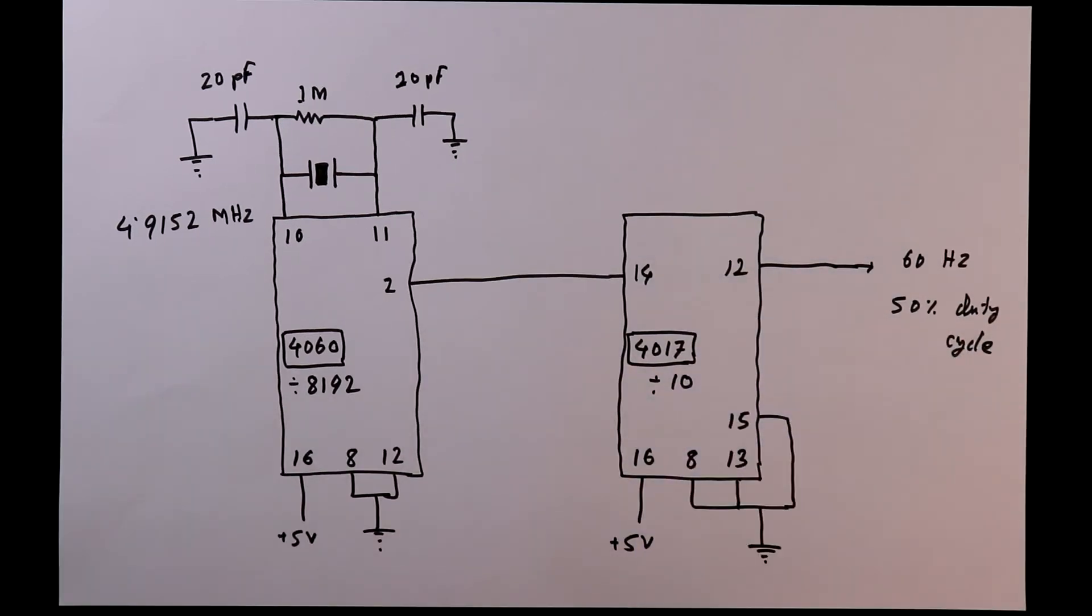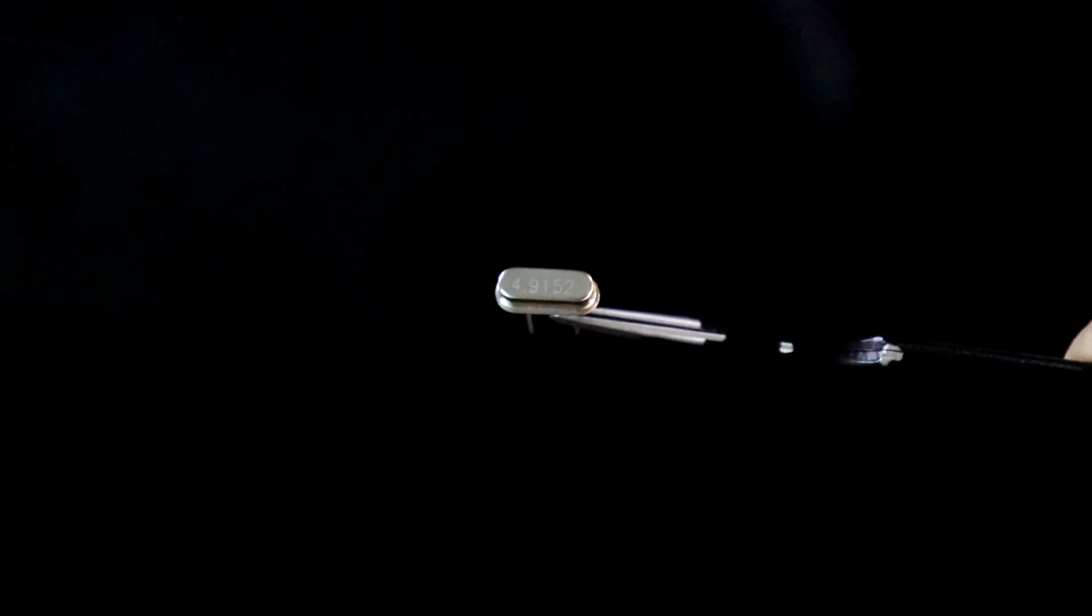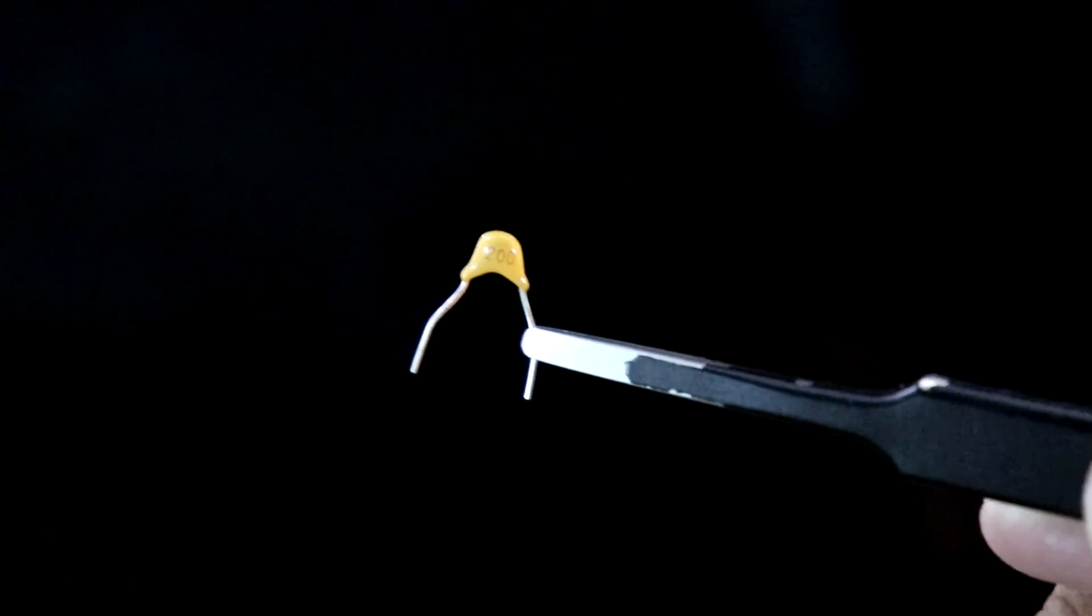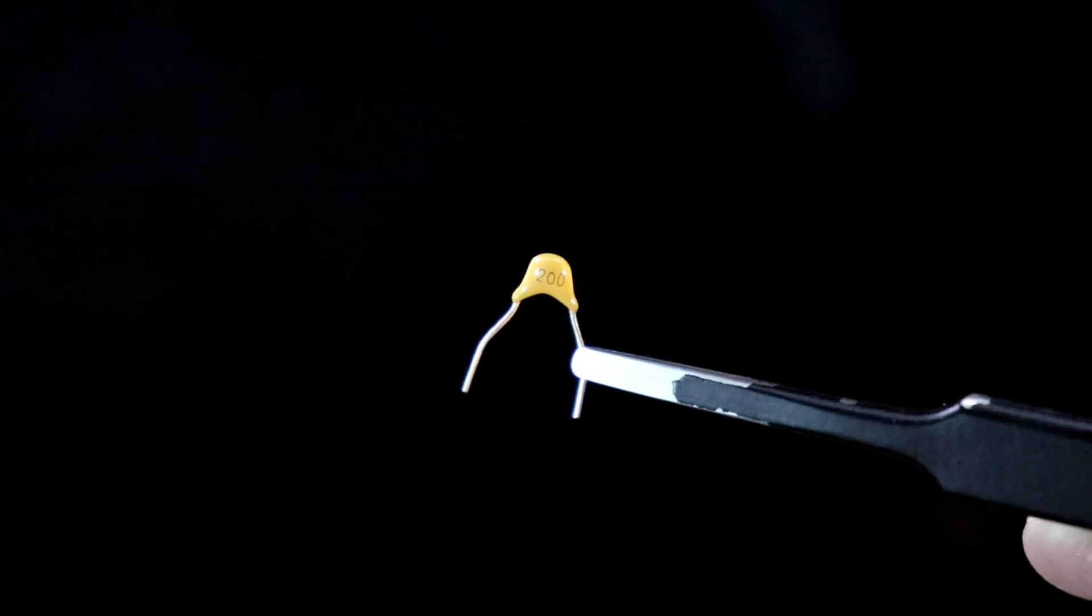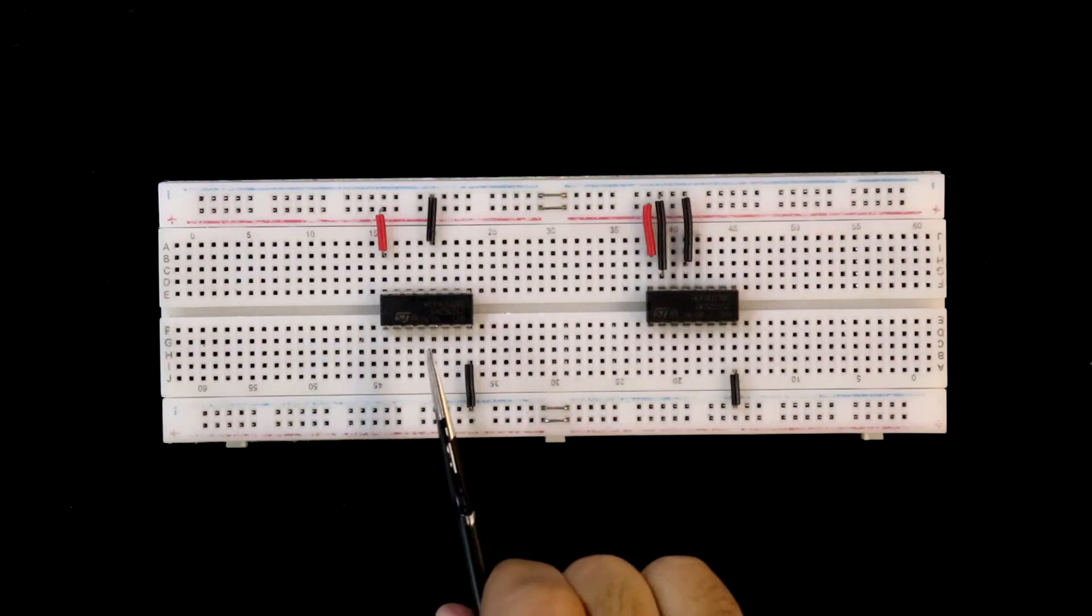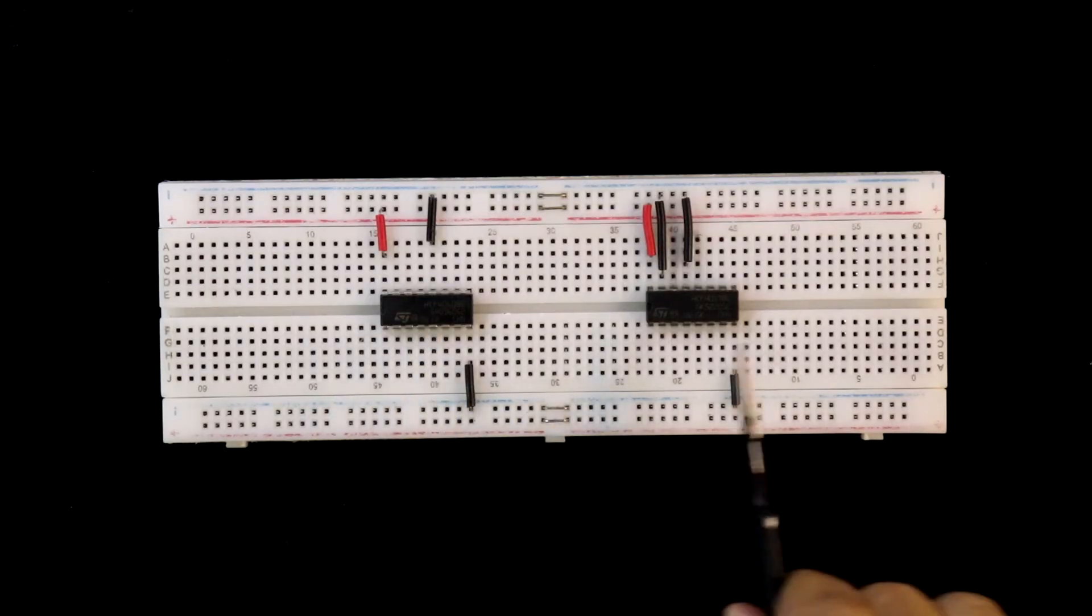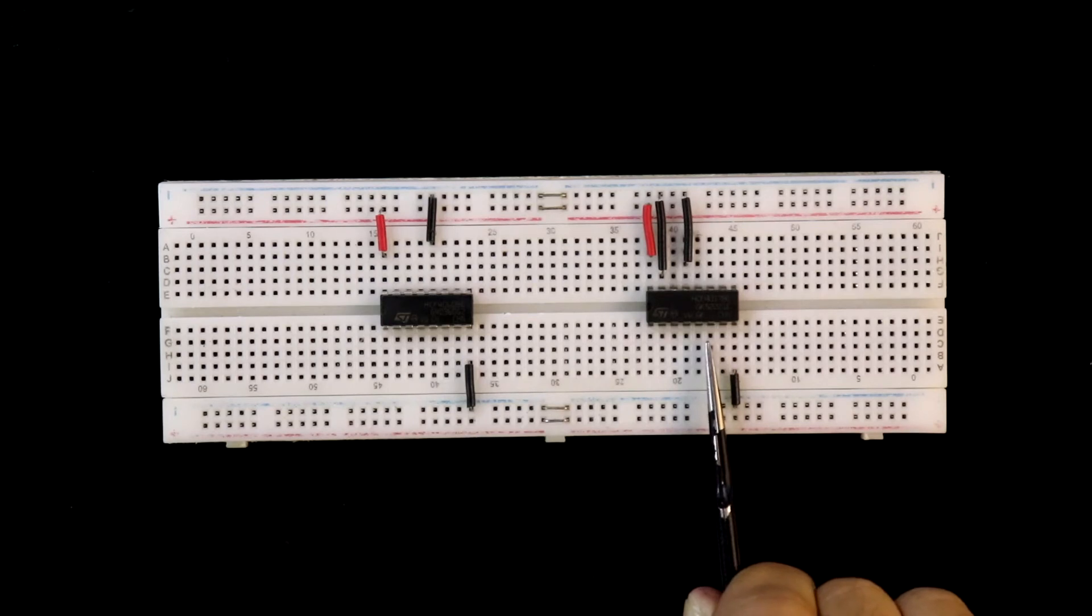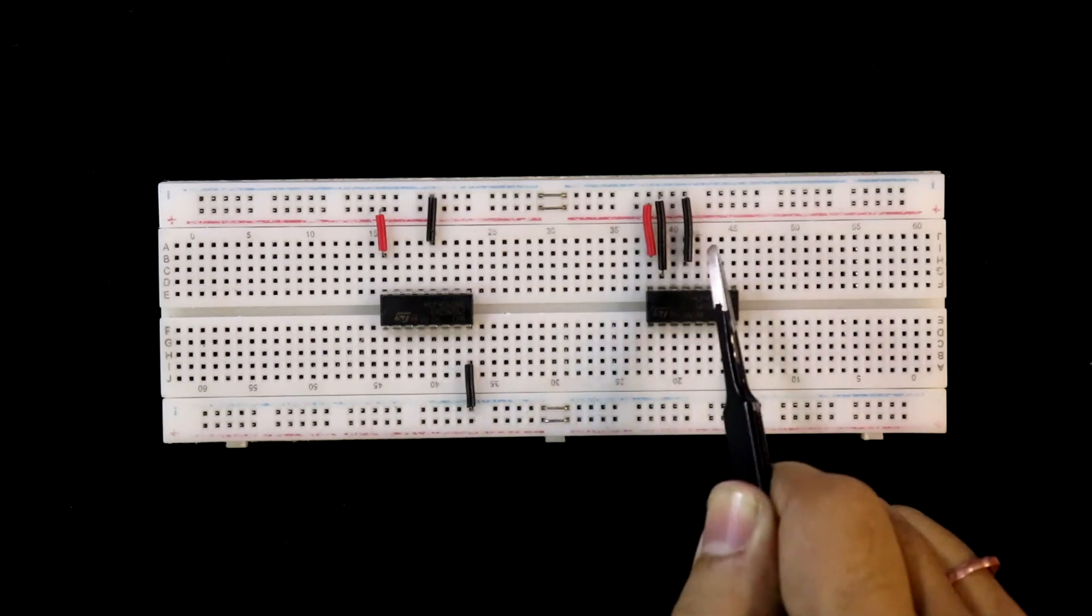Now we will see the breadboard connection and the output. This is the crystal oscillator and this is the 20 picofarad ceramic capacitor. Here it is 4060 IC and this is 4017 IC, and these pins are already connected to power supply.